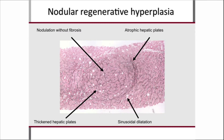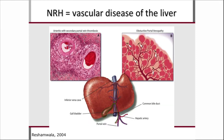The liver biopsy showed nodules that were not separated by fibrosis — the key difference from liver cirrhosis. Hepatocytes were either atrophic or thickened and swollen, and there were dilated sinusoids suggesting a blood flow problem. This is called nodular regenerative hyperplasia — NRH — which explained his portal hypertension.